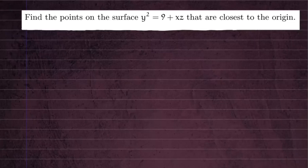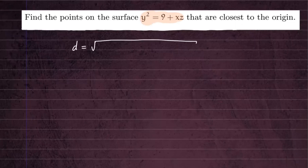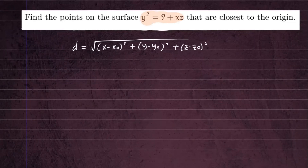Hi everyone, let's take a look at this problem. We're going to find the points on this surface that are closest to the origin. So we're going to create a distance function from the origin to any point in space. Let's write down the distance formula: D equals the square root of (X minus X₀)² plus (Y minus Y₀)² plus (Z minus Z₀)². That is going to be our distance formula.